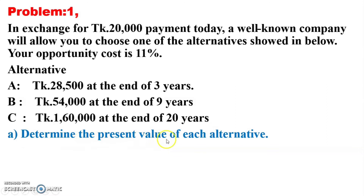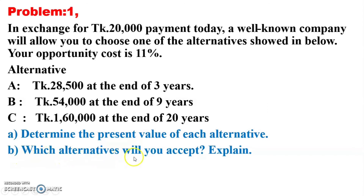You are required to determine the present value of each alternative and which alternative you will accept and explain. My dear students, look at the questions — there are three alternatives, and each alternative returns a single time. The first alternative returns after three years, the second after nine years, and the third after 20 years. So we will use the present value formula for single returns and yearly compounding.